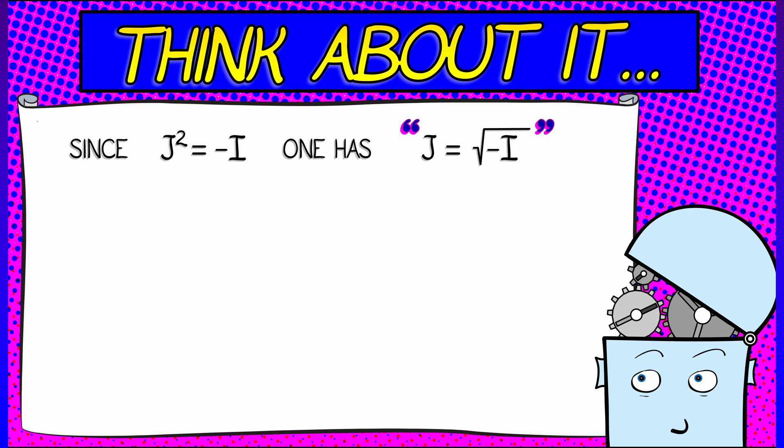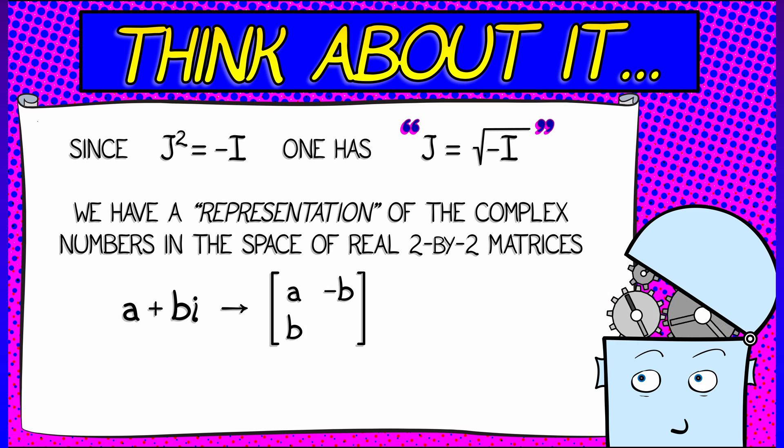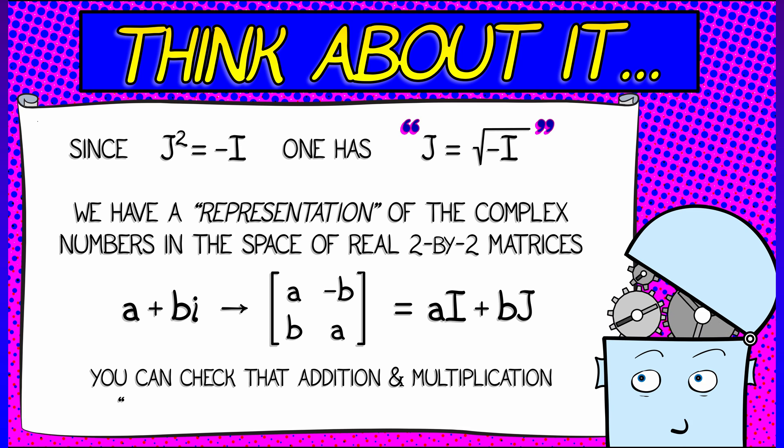And this analogy pushes even further in that if you take any complex number, the number of the form A plus BI, so real part A, complex part B, then you can represent this as the two-by-two matrix A, negative B, B, A. That is A times I, the identity, plus B times J, this two-by-two matrix. That is a really cool representation of complex arithmetic, and that's just a great example of matrix algebra in action.